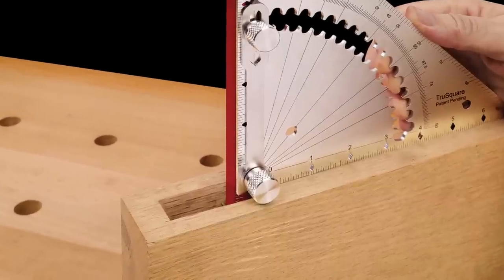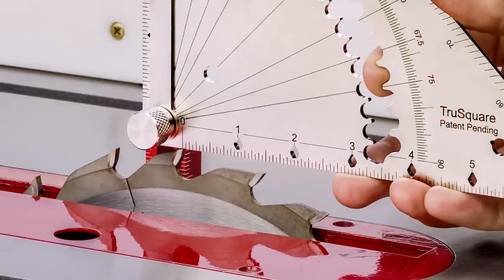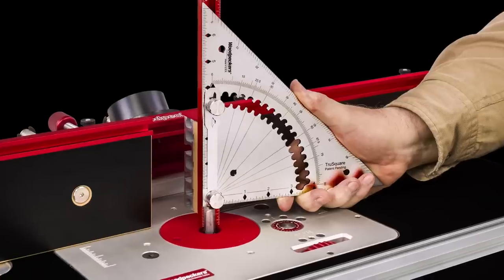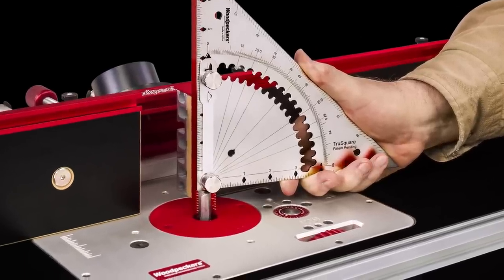Also use True Square to check depth, then to set table saw blade or router bit height. Your setups will be spot on every time.